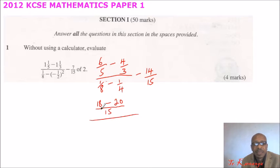Then we come to the denominator. We have the LCM here is 8. So this will, 8 divided by 8 is 1. 1 times 1 is 1. So this will be 8 divided by 4 is 2. 2 times 1, you get 2. And you minus 14 over 15.